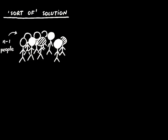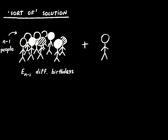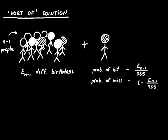Suppose you have a random group of N-1 people. On average, such a group will have, say, E_{n-1} distinct birthdays. Suppose also that we have picked the so-called average group — that is, a group of people with exactly E_{n-1} distinct birthdays. Now let one more person join this average group. The probability that this person will share their birthday with someone else is E_{n-1} over 365, and the probability that their birthday will be unique is obviously 1 minus that quantity.